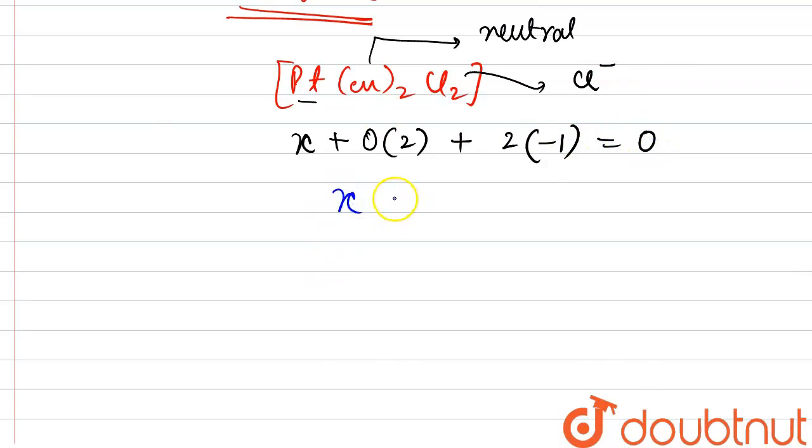So from here, we would be getting X is equal to plus 2. So this is the oxidation state of platinum and the coordination number is 6.